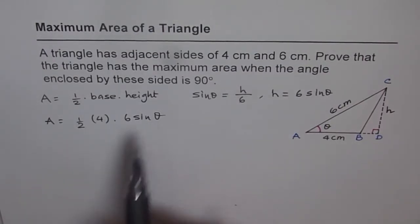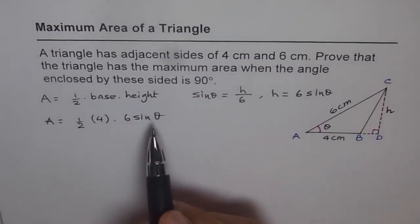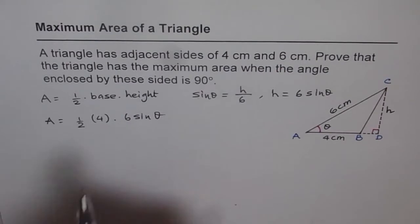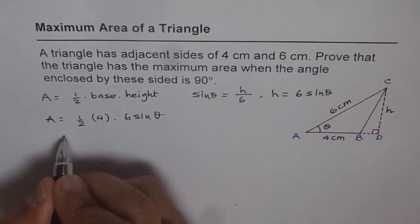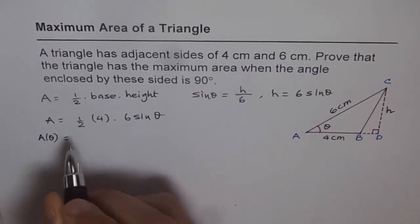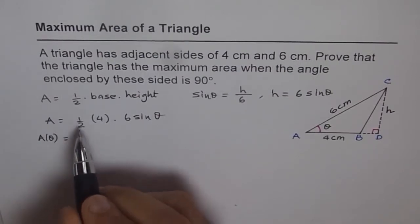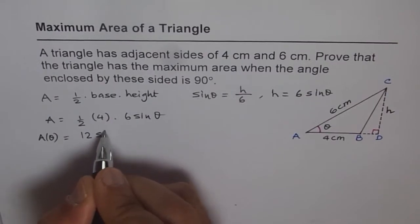We can differentiate this equation with respect to theta and find when to maximize this. For what angle it is maximum. So let's simplify this first. We can write this equation function as, let me write A as a function of theta given to us. It is half of this is 2 so we get 12 sin theta.